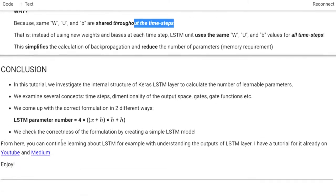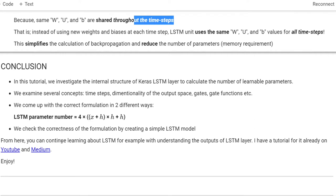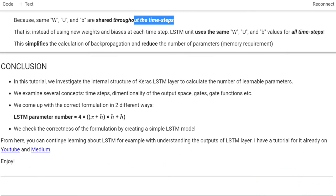Let me conclude. In this tutorial, we investigated the internal structure of Keras's LSTM layer to calculate the number of learnable parameters. We examined several concepts: time steps, dimensionality of the output space, gates, gate functions, and more. We came up with the correct formulation in two different ways: LSTM parameter number = 4 × (X + H) × H + H. We checked the correctness of the formulation by creating a simple LSTM model, and we noted that time steps do not have an effect on the number of parameters. From here, you can continue learning about LSTM, for example by understanding the output of the LSTM layer — I have a tutorial for that already on YouTube and Medium. Thank you for watching.